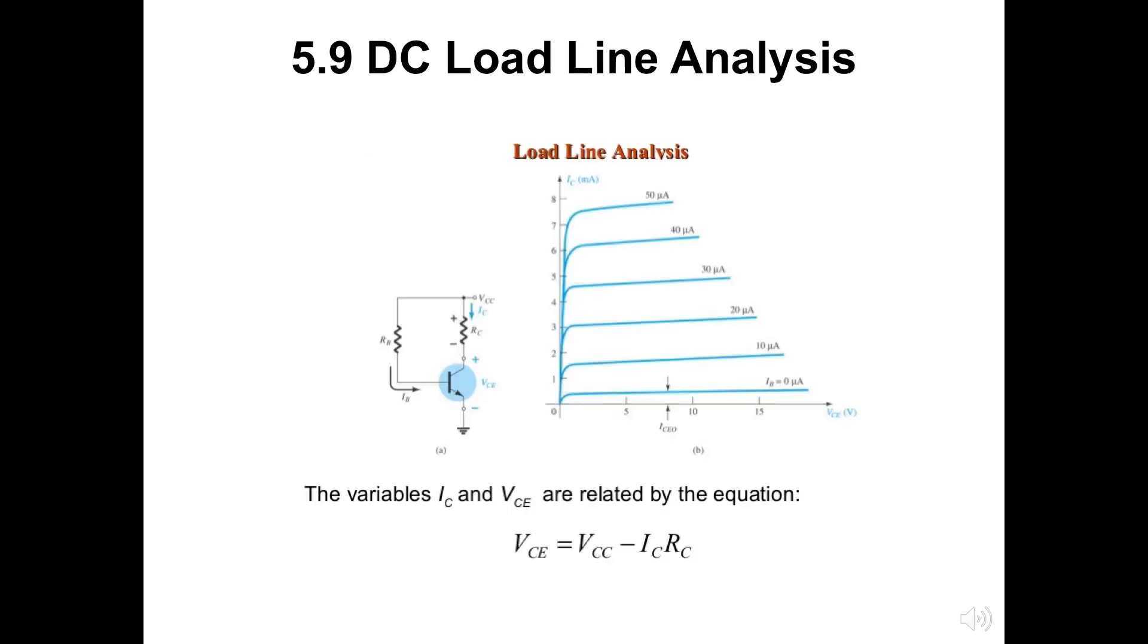Using the common base configuration here, IC and VCE can be described as the equation below. The IB is differs on the horizontal line in the graph. IC is illustrated by the blue line from the top to bottom direction. The VCE is the voltage colored by the blue shaded area here.